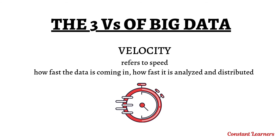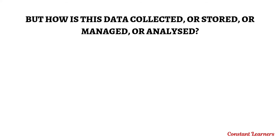The third characteristic is velocity, which refers to speed. In relation to big data, it essentially measures how fast the data is coming in and how fast it is analyzed and distributed. So big data is simple data that grows exponentially — but how is this data collected, stored, managed, or analyzed?